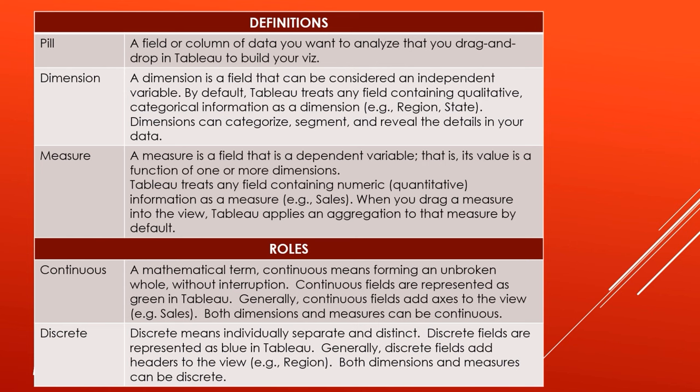A dimension is a field that can be considered an independent variable — any field containing qualitative, categorical information is a dimension in Tableau. For example, a region field or a state field. Dimensions can categorize, segment, and reveal the details in your data. Then you have measures, which are dependent variables — their value is a function of one or more dimensions. Tableau treats any field containing numeric or quantitative information as a measure, for example sales. When you drag a measure into the view, Tableau applies an aggregation to that measure by default, typically defaulting to the sum aggregate.